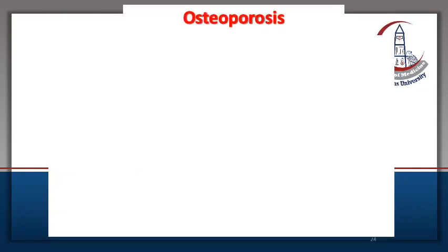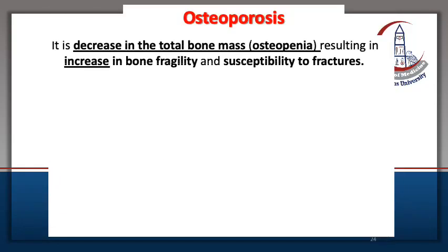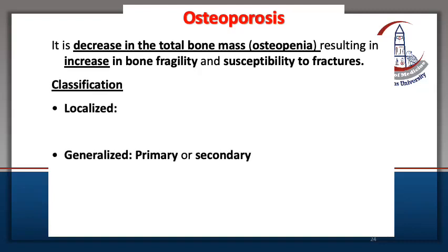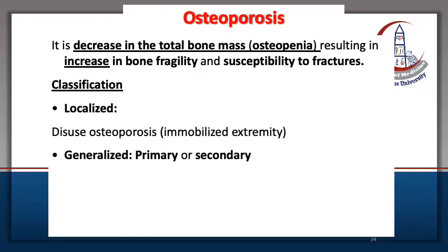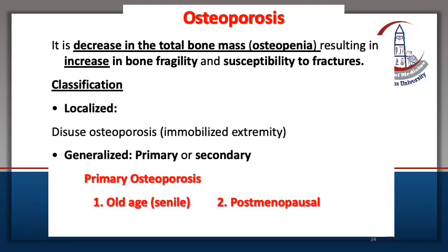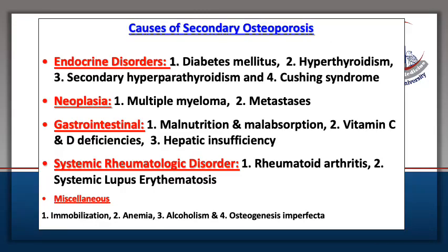Osteoporosis is defined as a decrease in the total bone mass, also called osteopenia. It may be localized, such as in an immobilized extremity, or generalized in cases of old age or postmenopausal state with secondary osteoporosis. There are several causes of secondary osteoporosis.